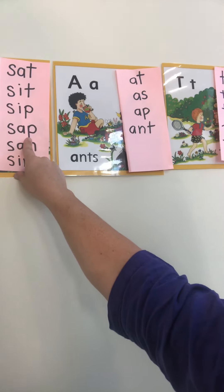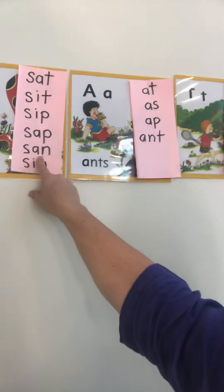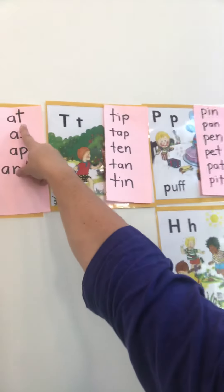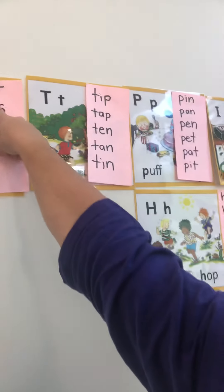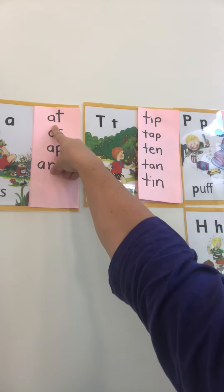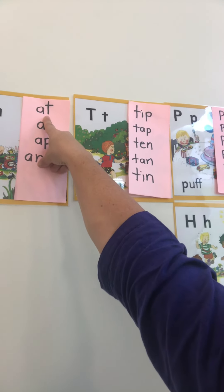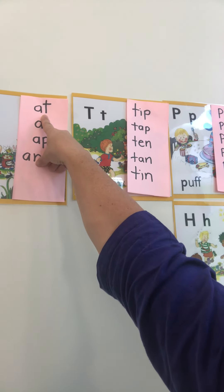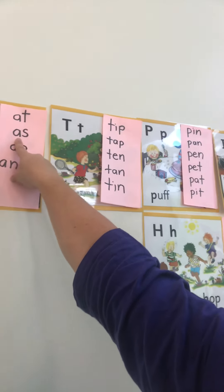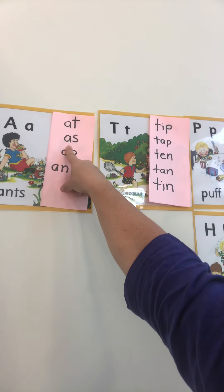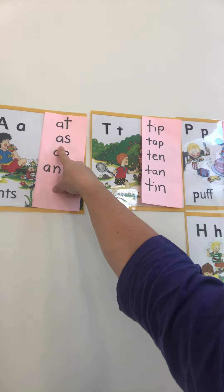Sap. Good. Let's go to some 'at' words. Nayef — at. Good. Faisal — as.